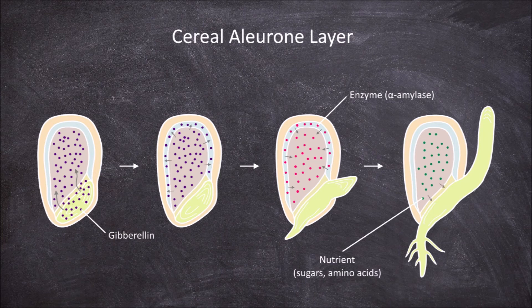From there the scutellum absorbs these sugars and other solutes and transports them to the growing embryo. In summary, the function of the aleurone layer is in the synthesis and secretion of hydrolytic enzymes, specifically alpha amylase. Once they have done this, the cells of the aleurone layer go through programmed cell death.